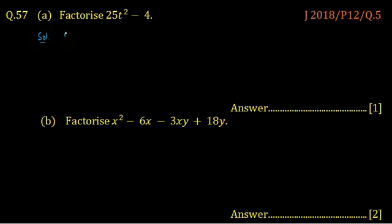First rewrite the expression, it is 25t square minus 4. Both terms can be converted into square form. It can be written as 5t square - when the square is applied to the 5, it becomes 25 and applied to the t, it becomes t square. And minus 4 can be written as 2 square.